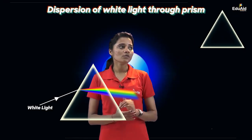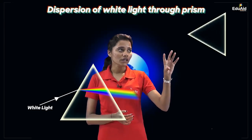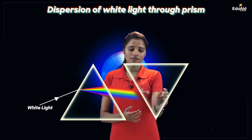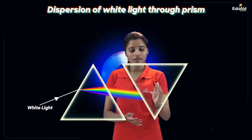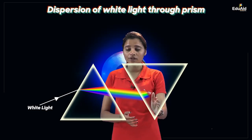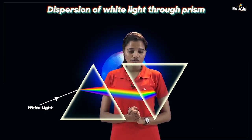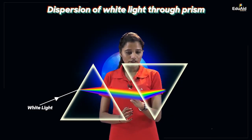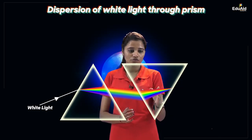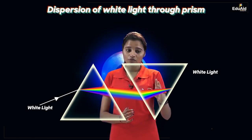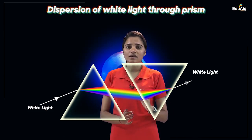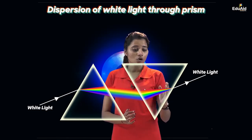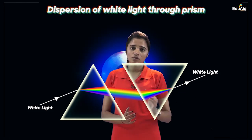Let us check. We take a prism and invert it, placing it in the inverted position relative to the first prism. What this second prism will do is: as soon as the seven components undergo refraction through this inverted prism, it will recombine the seven colours. After recombination, you will get white light, which will emerge from this second prism.